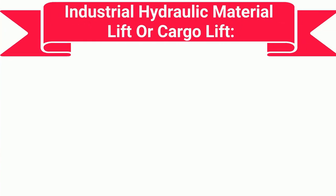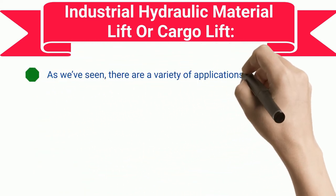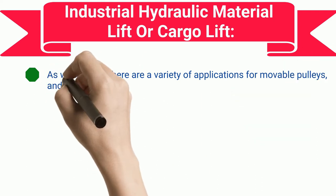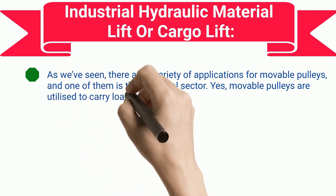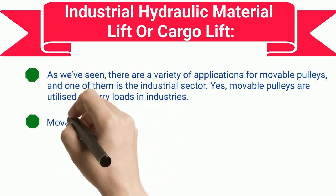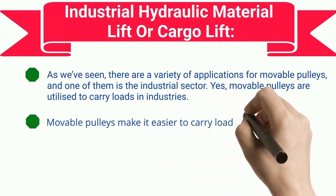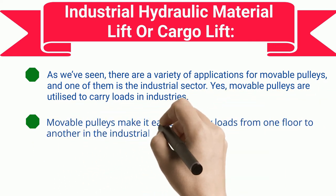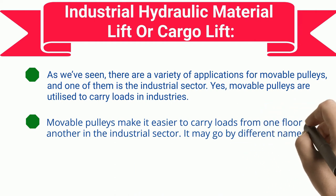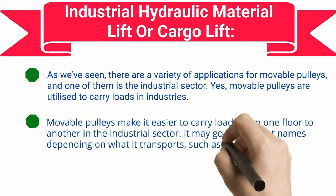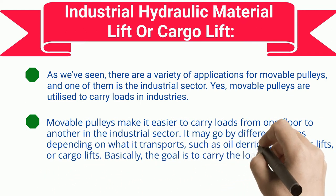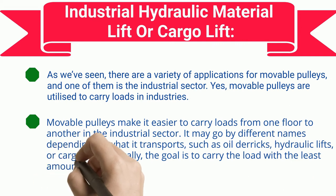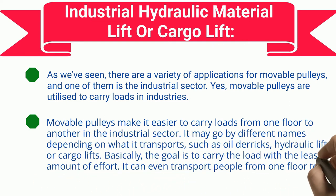Industrial Hydraulic Material Lift or Cargo Lift. There are a variety of applications for movable pulleys, and one of them is the industrial sector. Movable pulleys are utilized to carry loads in industries. Moveable pulleys make it easier to carry loads from one floor to another in the industrial sector. It may go by different names depending on what it transports, such as oil derricks, hydraulic lifts, or cargo lifts. Basically, the goal is to carry the load with the least amount of effort. It can even transport people from one floor to another.